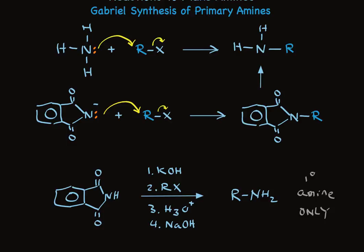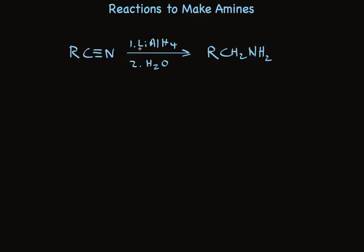Let me show you another way to make primary amines. When a nitrile is treated with lithium aluminum hydride, this very powerful reducing agent, and water in the second step, you make a primary amine that has a CH2 group attached to the nitrogen. So to use this reaction, you have to be able to make the nitrile, which is usually done by treating an alkyl halide with cyanide.